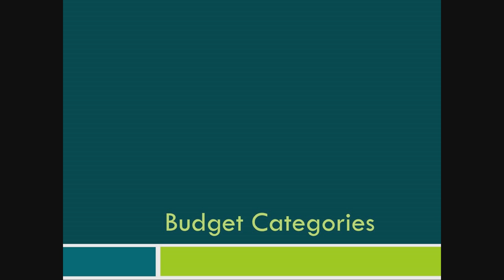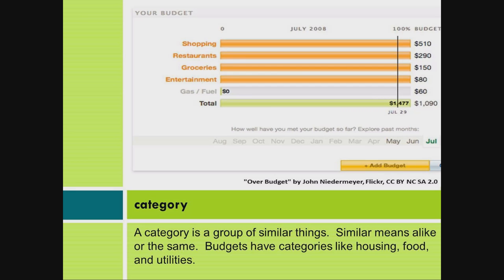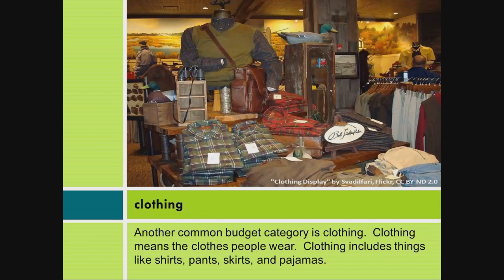Budget categories. A category is a group of similar things. Similar means alike or the same. Budgets have categories like housing, food, and utilities. Another common budget category is clothing. Clothing means the clothes people wear.